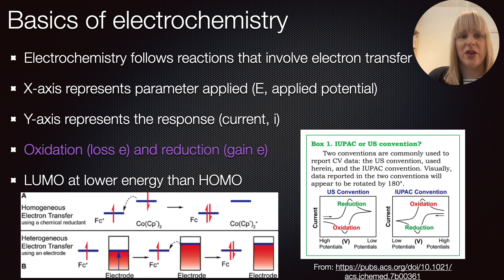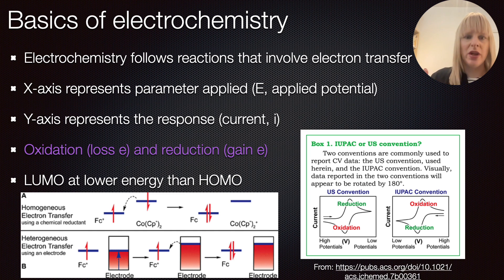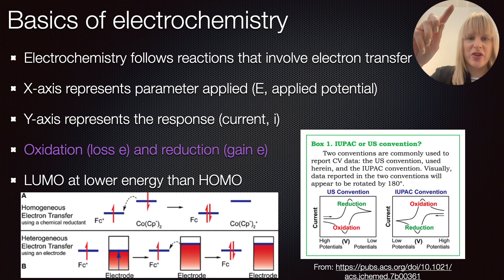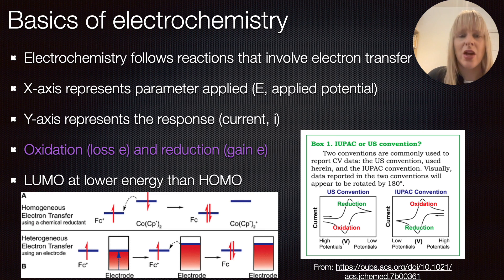Typically the x-axis represents the parameter applied — the applied potential, or what you normally see as the voltage — and the y-axis represents the response to this, which in this case is the current. In cyclic voltammetry, as you can see the shape, it's a cyclic pattern, so you apply potentials going back and forth. Typically you would start off at a lower potential, then scan back to the higher potential and then come back. You can repeat this multiple times and most of the time we are interested in the oxidation and reduction reactions happening within the applied potential window.